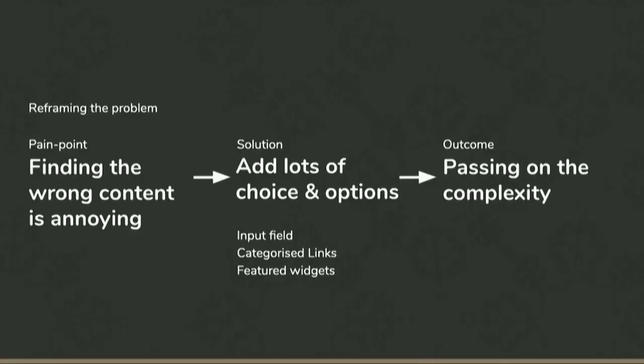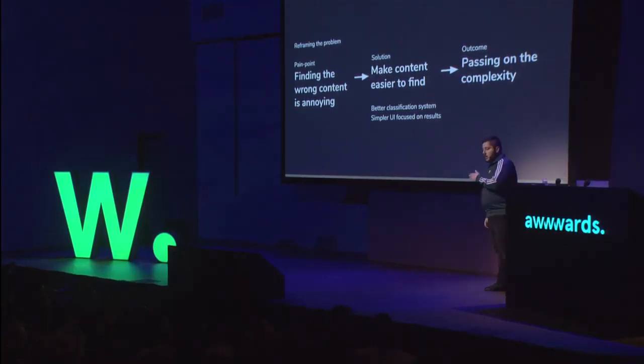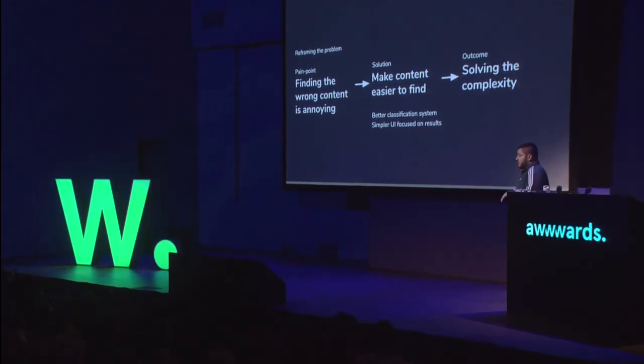But oftentimes it's the opposite effect. The powerful thing to do is remove features, because then you focus the experience. So, reframing the problem: finding the wrong content is annoying. Google's founders were PhD students, and in academia, how you classify good science is citations — generally, the more citations, the better the paper. So you replace citations with the concept of links. Now you only need three pieces of UI: a search input field and two buttons. That was a radical thing. Instead of passing on the complexity, you solve the complexity.